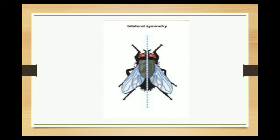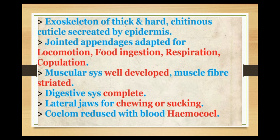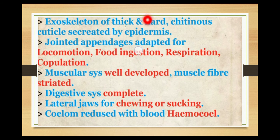The next characteristic is the exoskeleton. Arthropods have a thick and hard cuticle secreted by the epidermis. This exoskeleton is made of a thick chitinous cuticle, and the animals have jointed appendages adapted for locomotion.